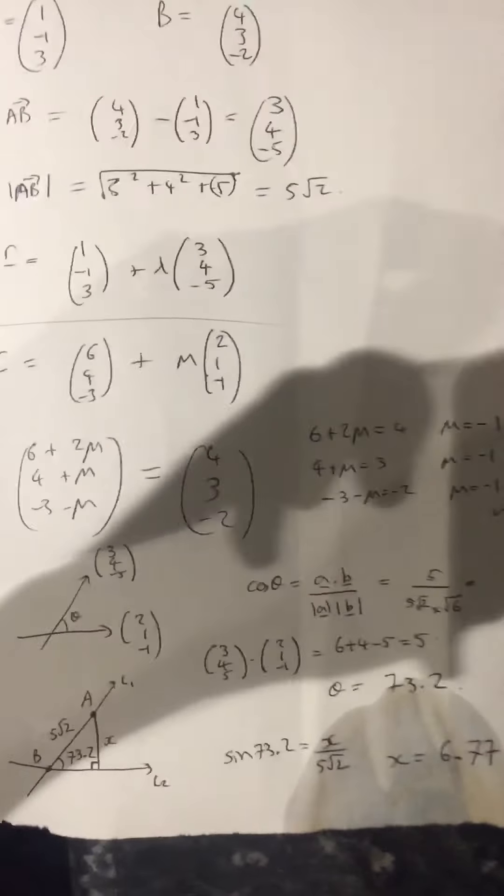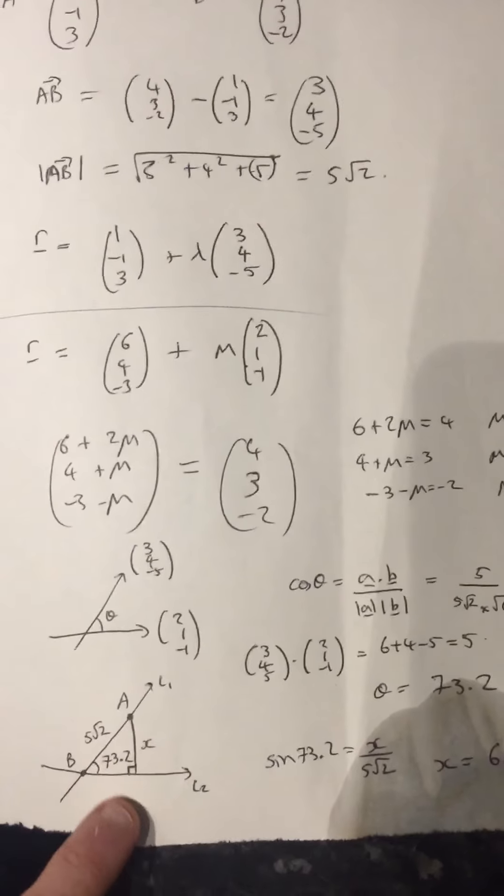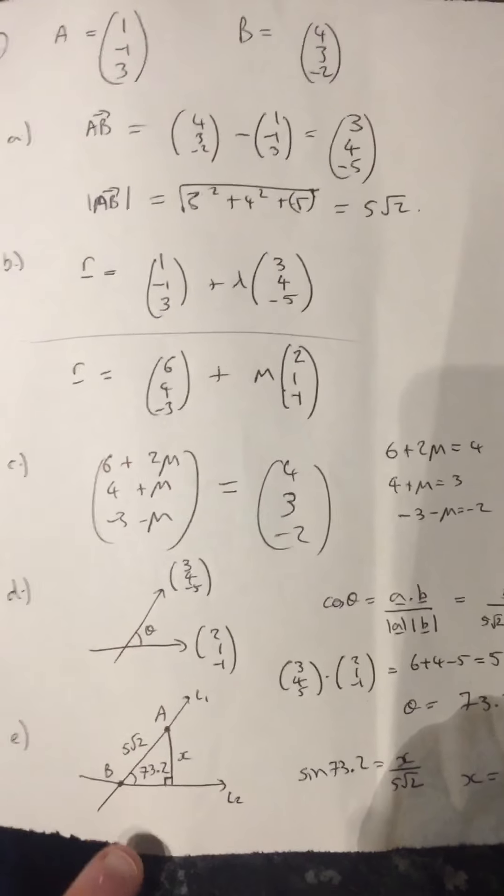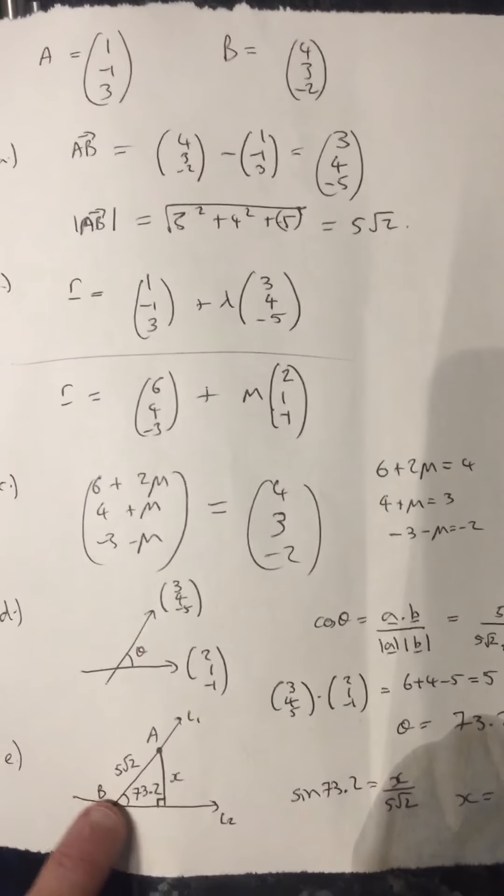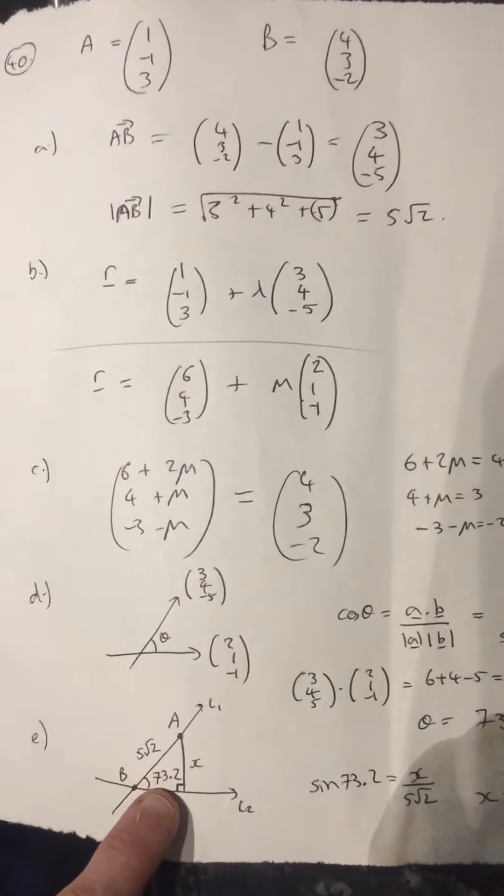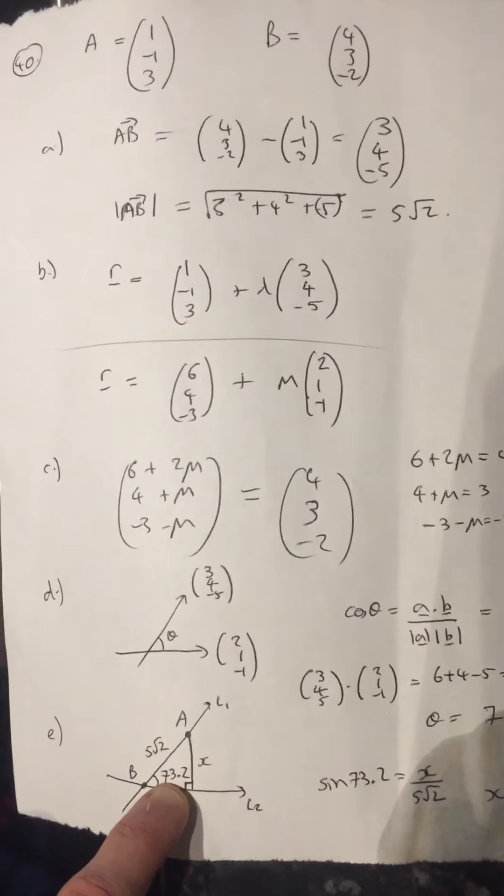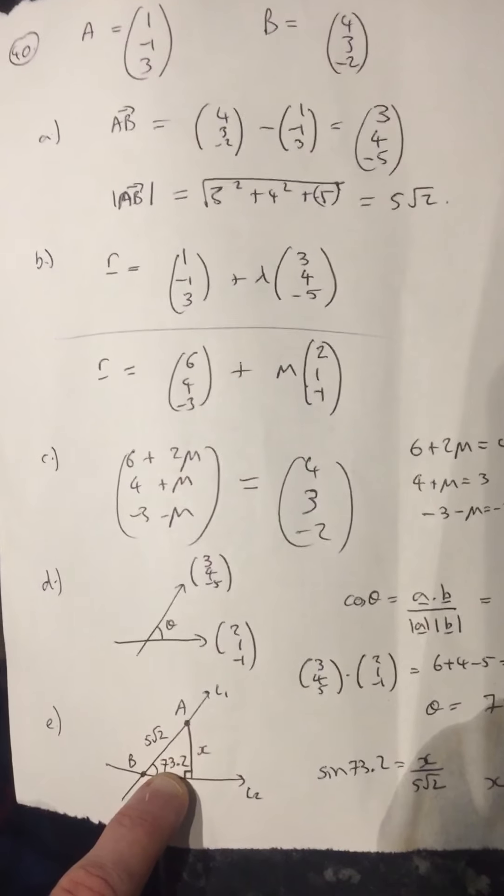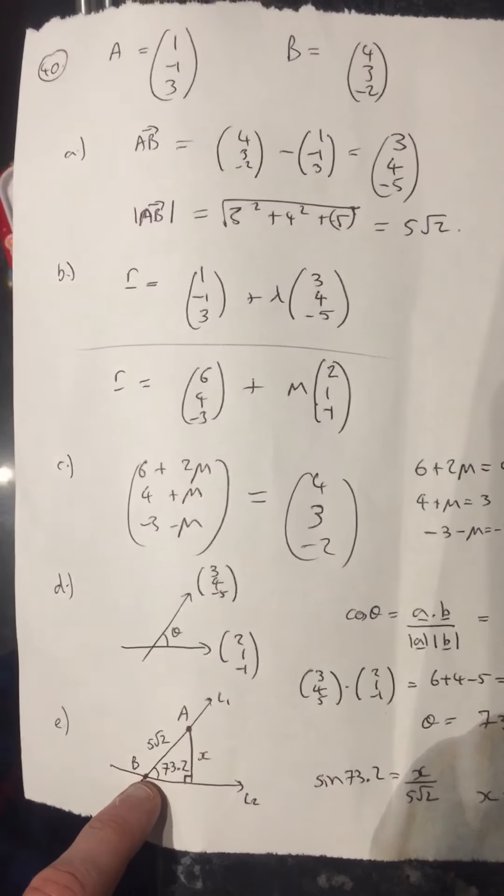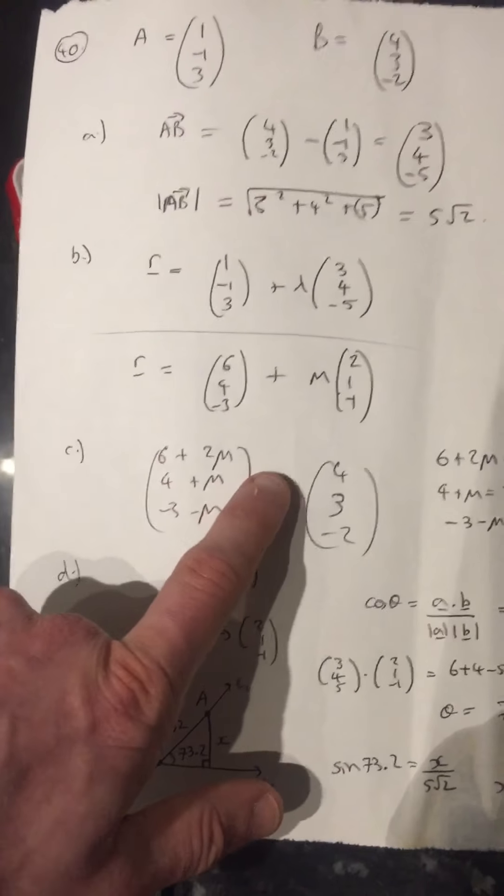And then the last part of the question. I've just drawn this diagram out again in a little bit more detail. So I've got line L2 going across here, I've got line L1 going up there. I know from the last part of the question the angle there is 73.2 degrees. And I know that the two points crossed at point B. I knew that from part C of the question.